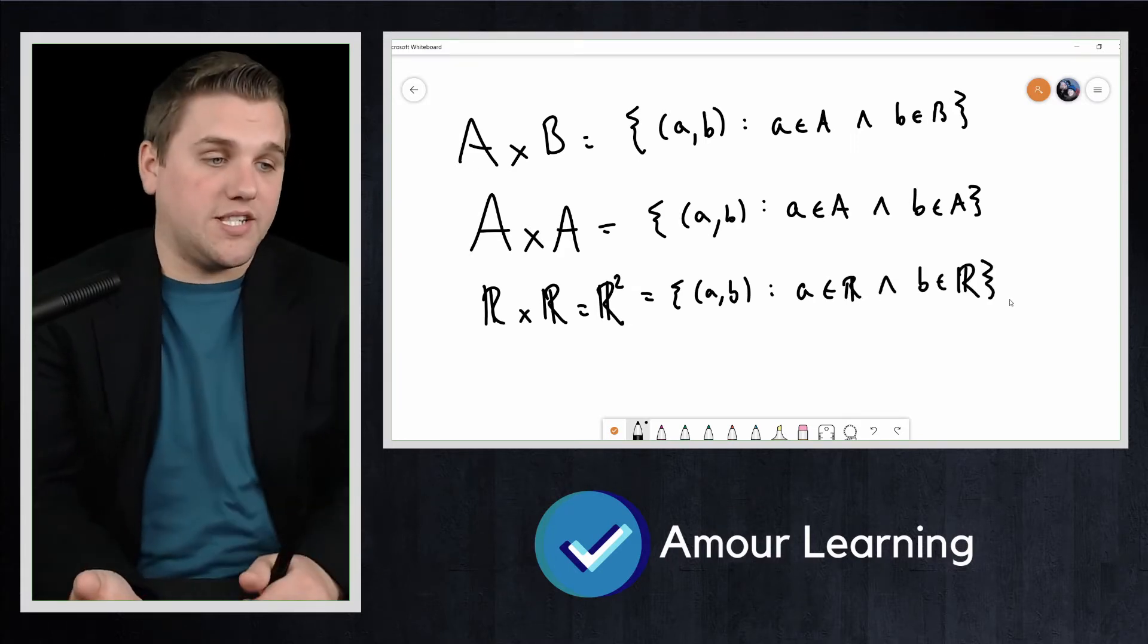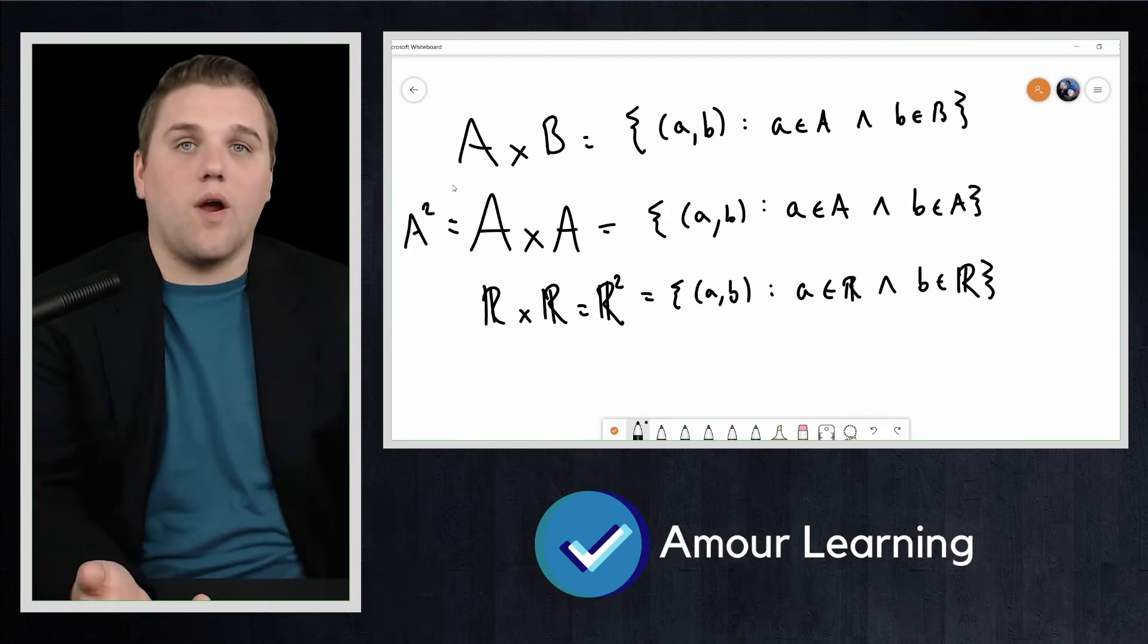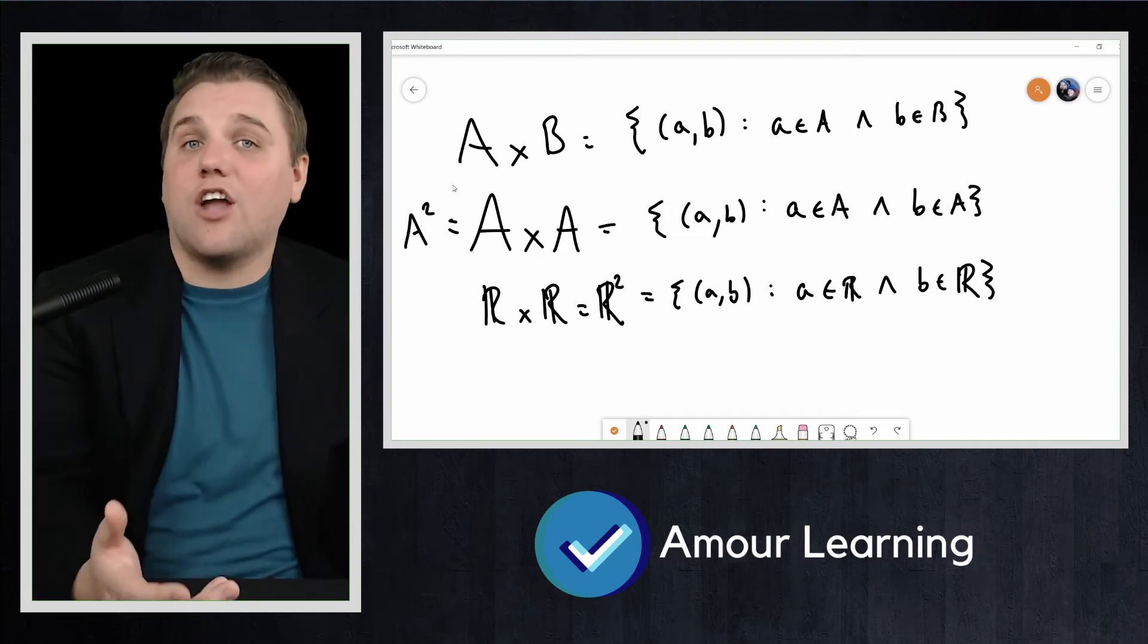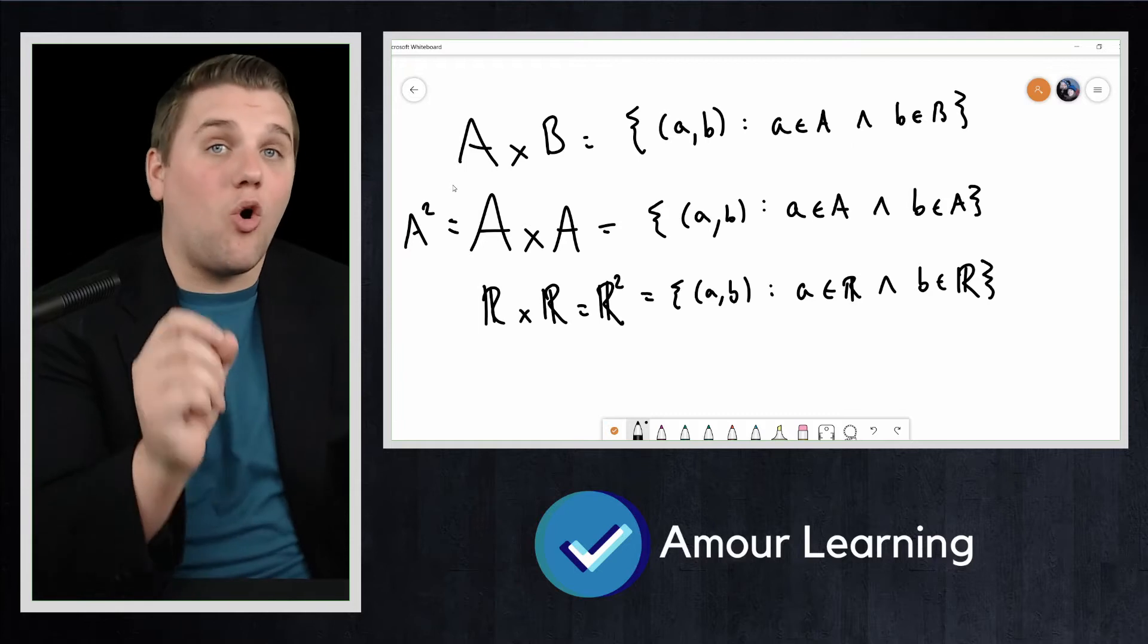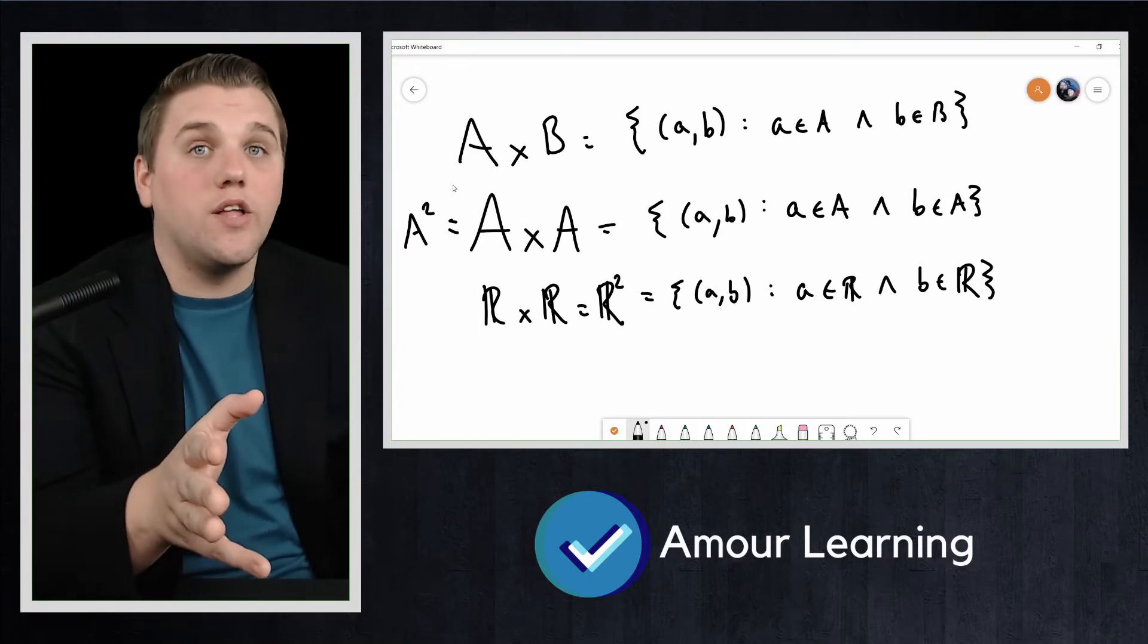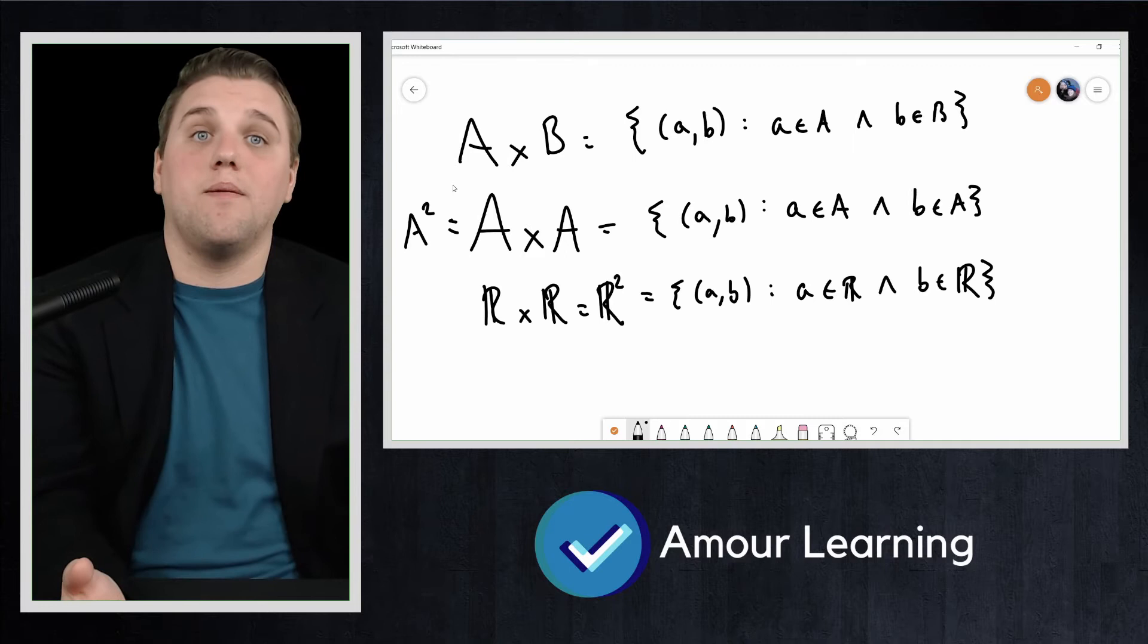We might also write this case as A squared. Notice that in A cross A, we still want all ordered pairs, not just the ones where the first and second coordinate are the same.